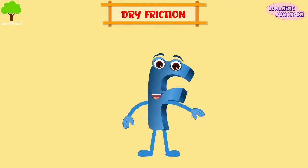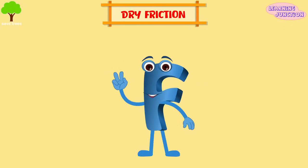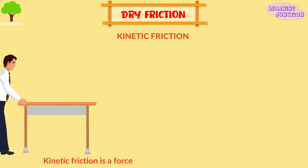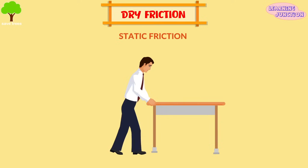Dry friction is subdivided into two types. First is kinetic friction between moving surfaces. See how this man is sliding the table while walking? And static friction is between non-moving surfaces.